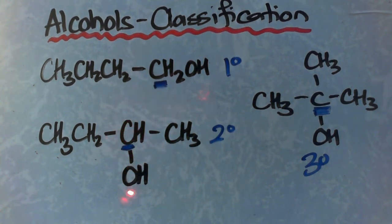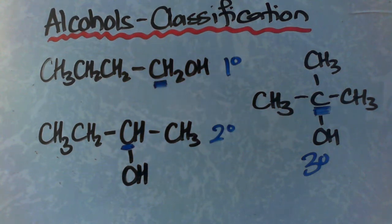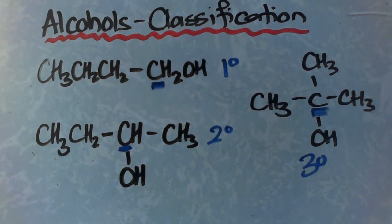Now if we have a look at the carbon that's bound to the OH, it in turn has two carbon-carbon bonds. Two carbon-carbon bonds means we call it secondary. Again, this will become important when we look at some of the reactions of alcohols later on.